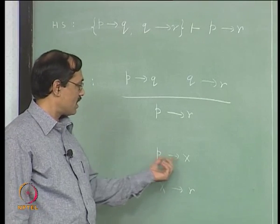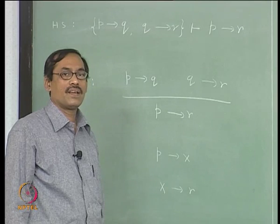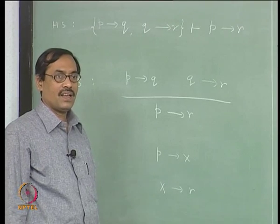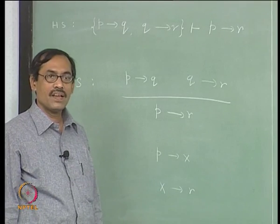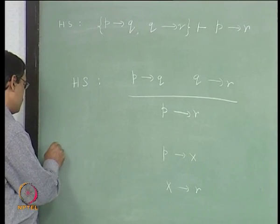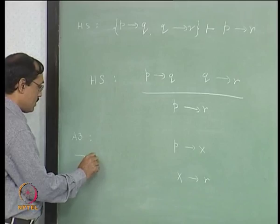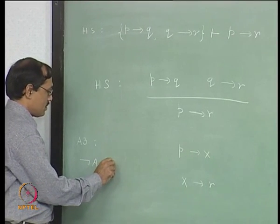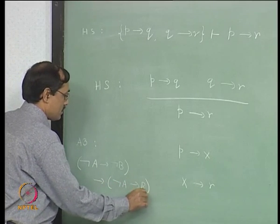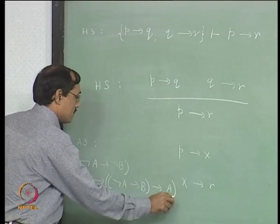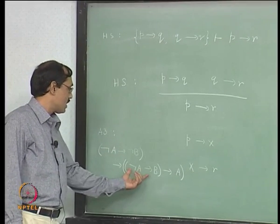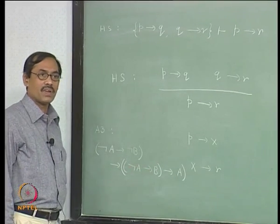What could x be? From axiom 1, I can take x to be anything implies p. The not symbol is involved, and I have only one axiom where not is involved — that is axiom 3. Axiom 3 looks like: not a implies not b, implies not a implies b implies a. If you have not a implies not b, then by modus ponens you can conclude not a implies b implies a.